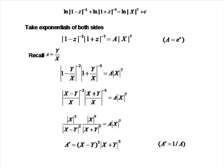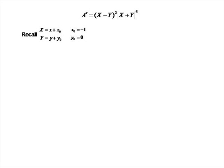Now we remember that capital X equals little x plus x₀ and capital Y equals little y plus y₀, where x₀ equals minus 1 and y₀ equals 0. Substituting back in gives the general solution: (x minus y minus 1)² times |x plus y minus 1|^5 equals a constant A prime. We drop the absolute value around the squared term because squaring always produces a non-negative value.